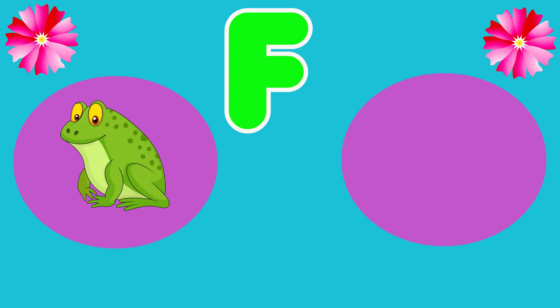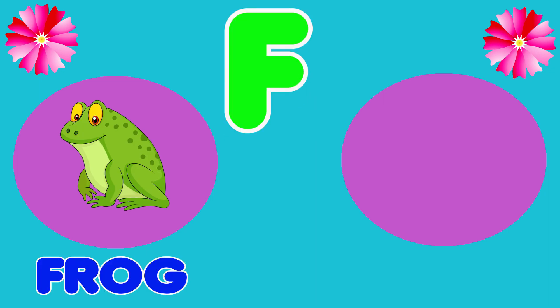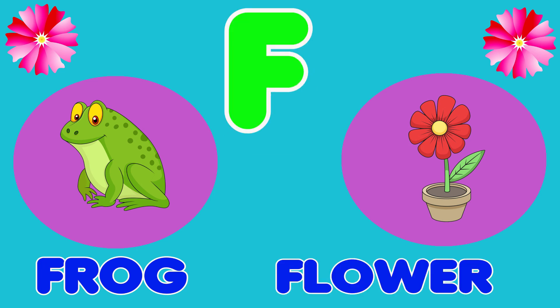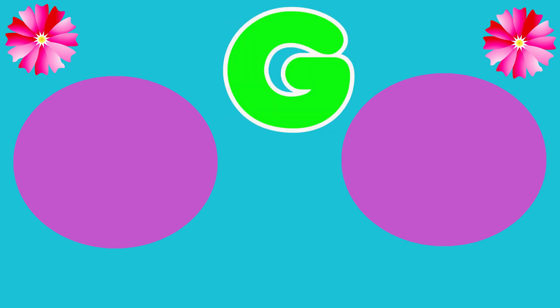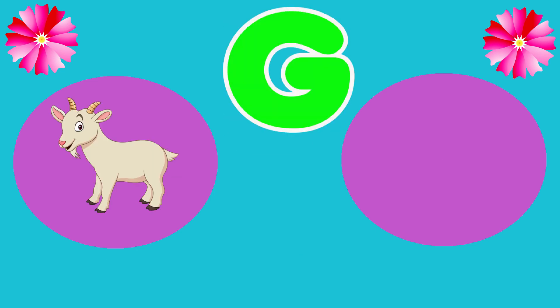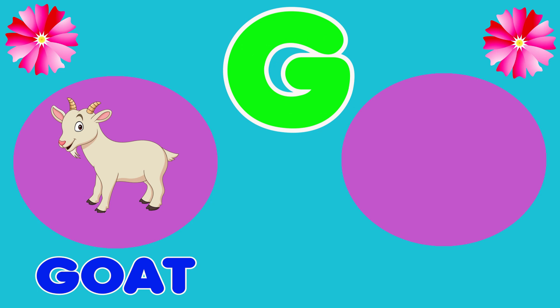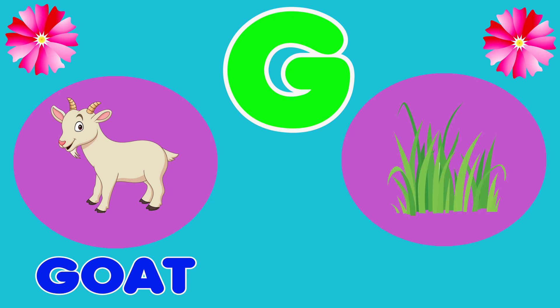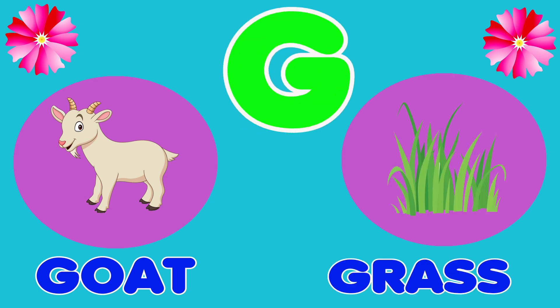F is for Frog. F, F, Frog. F is for Flower. F, F, Flower. G is for Goat. G, G, Goat. G is for Grass. G, G, Grass.